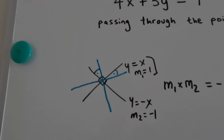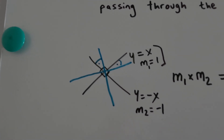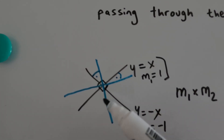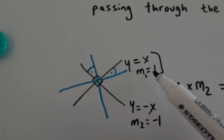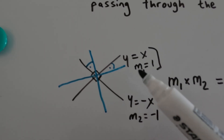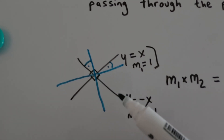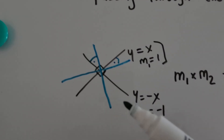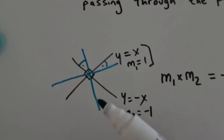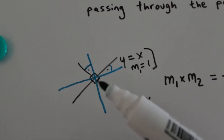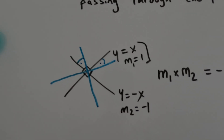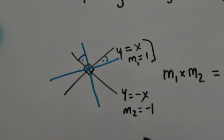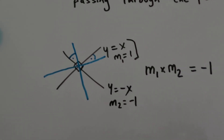I've drawn a little sketch of a graph. We've got the black line going from left to right — this is y equals x, which has a slope or gradient of 1, so m1 equals 1. Then the line going down this way is at right angles — it's perpendicular — and that is y equals minus x, basically a reflection in the y-axis. Its gradient is minus 1, so m2 equals minus 1.